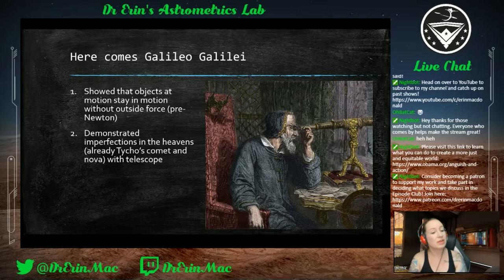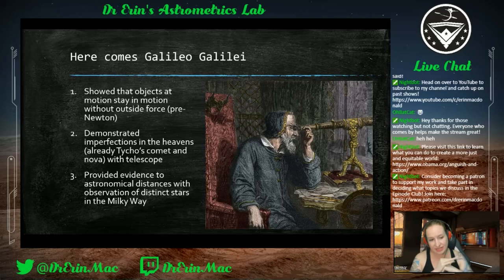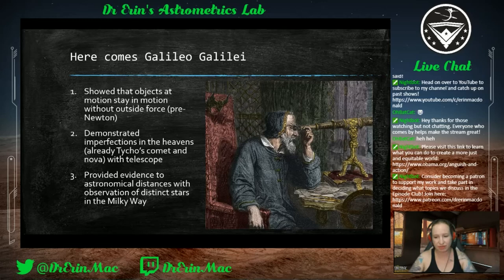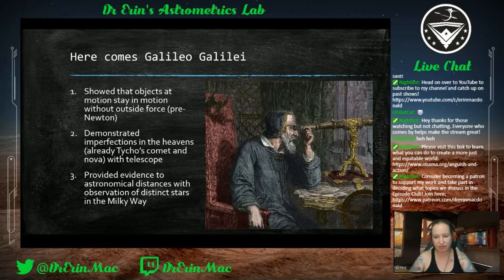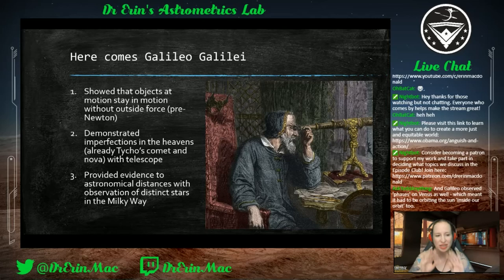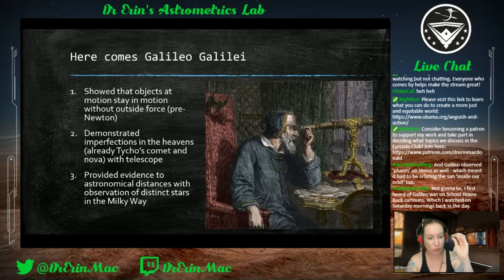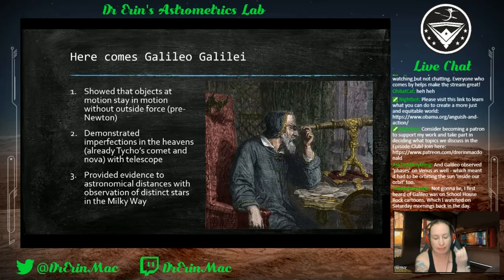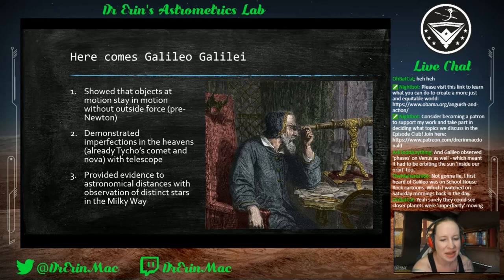Once society accepted that the heavens weren't perfect, they could accept that orbits weren't perfect circles. On stellar parallax: Galileo's telescope wasn't good enough to detect the shift in star positions as earth orbited the sun. But he was able to observe that the Milky Way was made up of individual stars, not just a cloud. This started to make people realize that stars are at astronomical — incredibly large — distances.